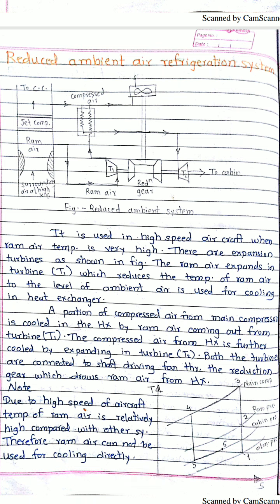We have now covered all four methods of aircraft refrigeration. The simple air refrigeration system is the basic cycle. The three modern types are bootstrap, regenerative, and reduced ambient. Bootstrap uses two compressors and two heat exchangers. Regenerative uses two heat exchangers with one compressor and one turbine. Reduced ambient uses one compressor, one heat exchanger, and two turbines. For MCQ purposes: if asked which system uses two compressors and two heat exchangers, the answer is the bootstrap air refrigeration system.